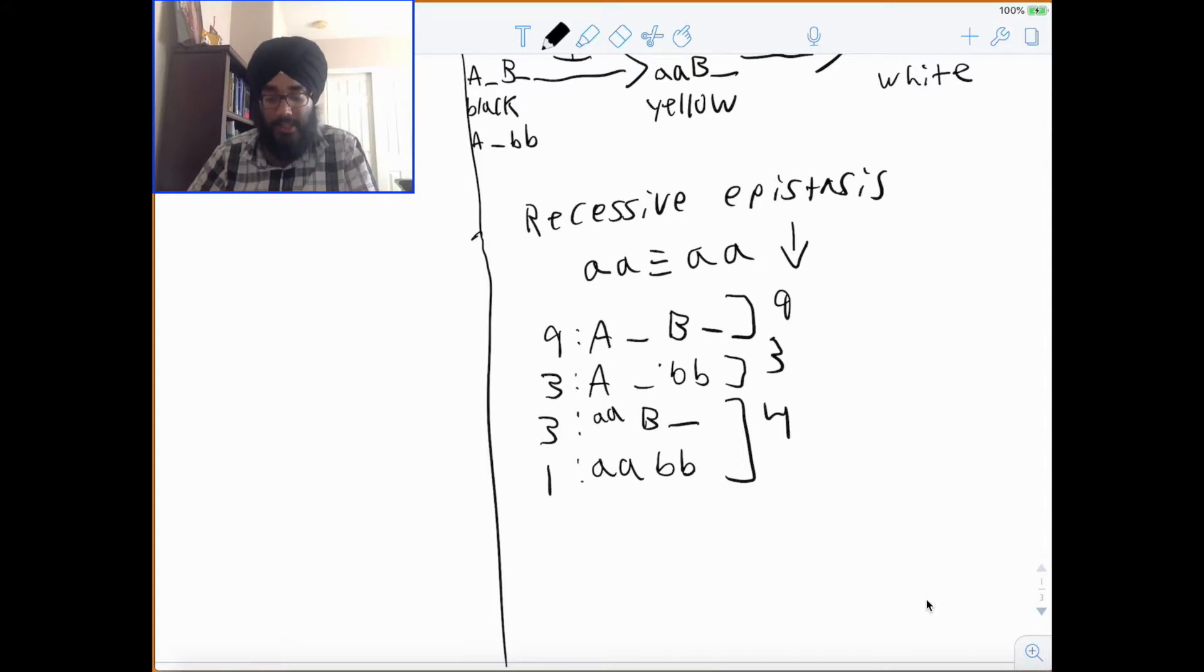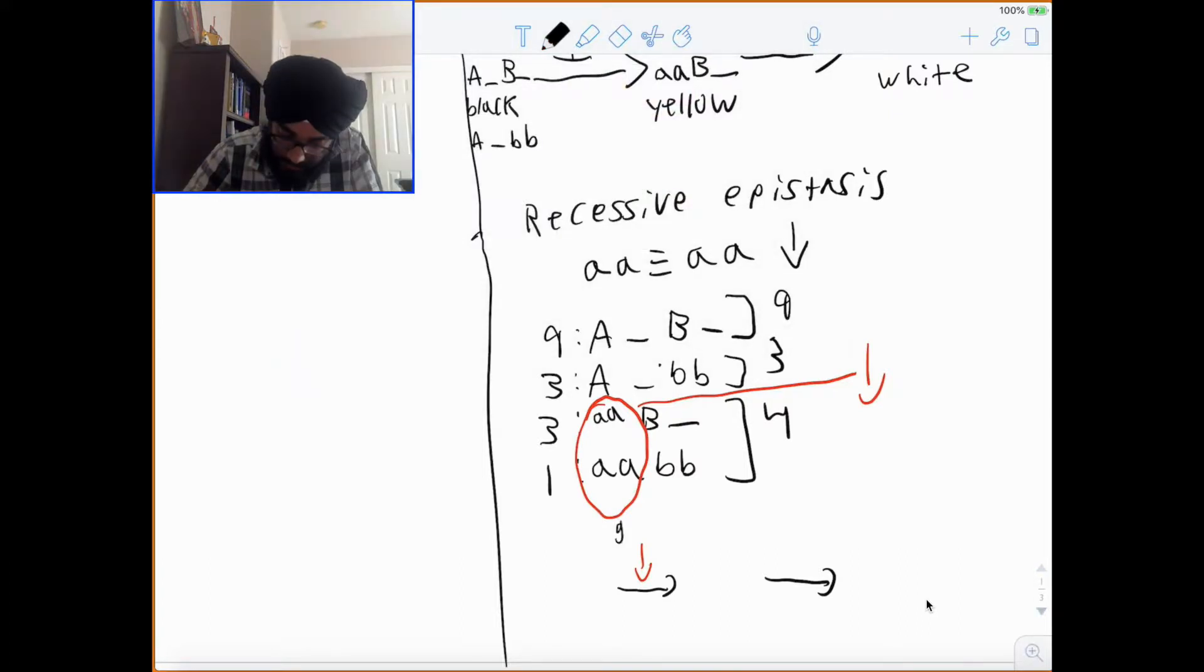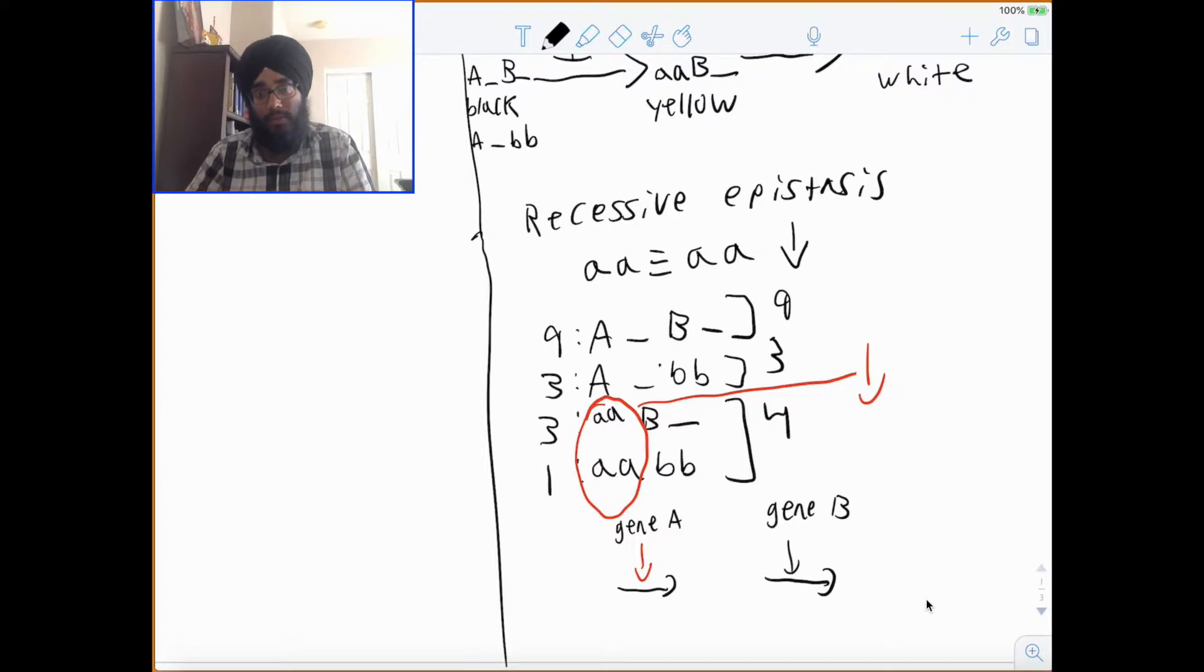In this case, recessive epistasis has a phenotypical ratio as 9-3-4. All of these dominant and recessive epistasis have the genotypic ratio of 9-3-3-1, but the phenotypic ratios vary. If I'm doing recessive epistasis, then I automatically know that my recessive is going to be in front. My recessive is doing the masking. And I notice the pattern, like I told you guys, right here. That's an indication that it's going to be this. So, my recessive is in front. So, gene A here, making this gene B.